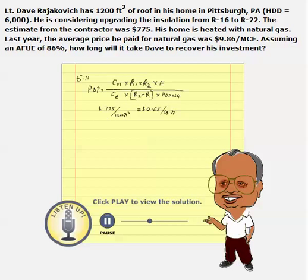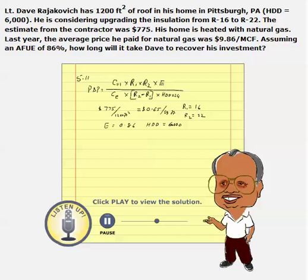Do we know R1? Yes. R1 equals 16, R2 equals 22, and furnace efficiency E is equal to 0.86. We also know HDD, which is 6,000, and 24 hours.